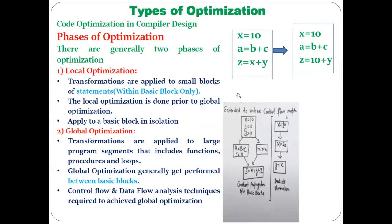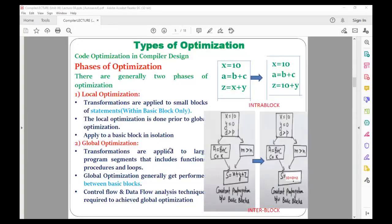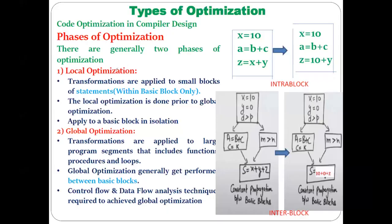Now we discuss the two types of optimization phases. There are two types: the first is local optimization and the second is global optimization. From the name alone you can understand what each means.